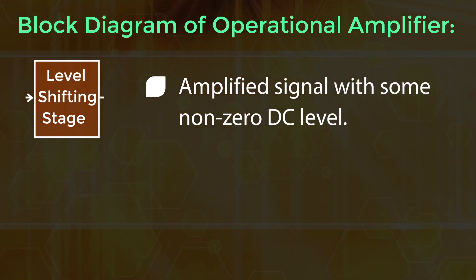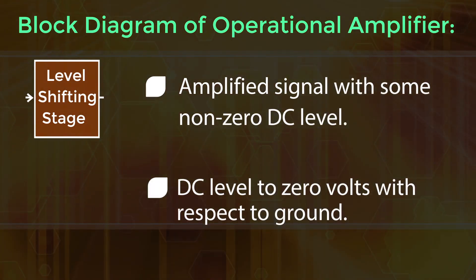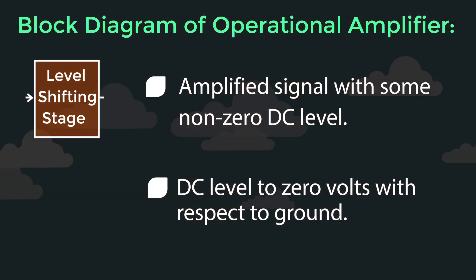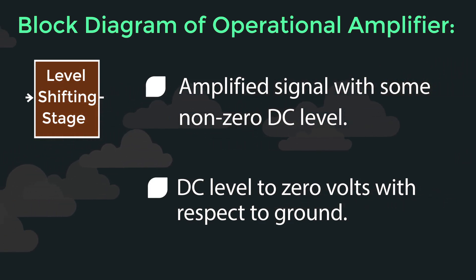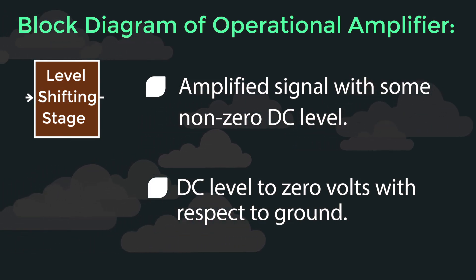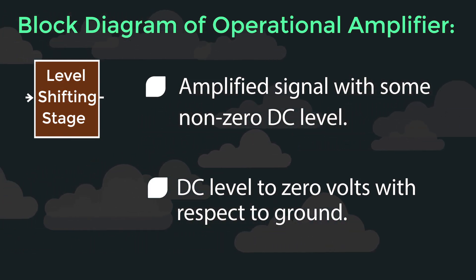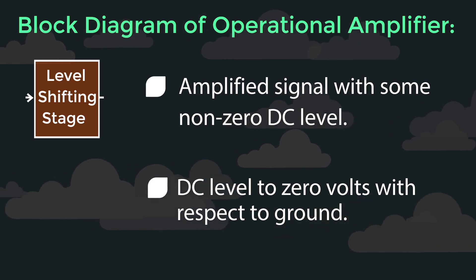Level Shifting Stage: Due to the direct coupling between the first two stages, the input of the level shifting stage is an amplified signal with some non-zero DC level. The level shifting stage is used to bring this DC level to zero volts with respect to ground.